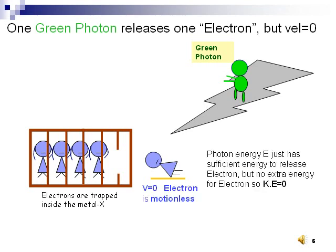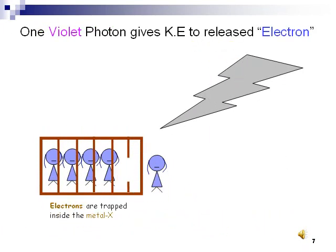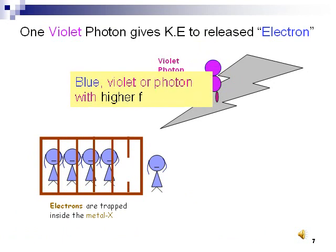So, how to make her run away? She said, only blue and violet photons could give her sufficient energy to run.